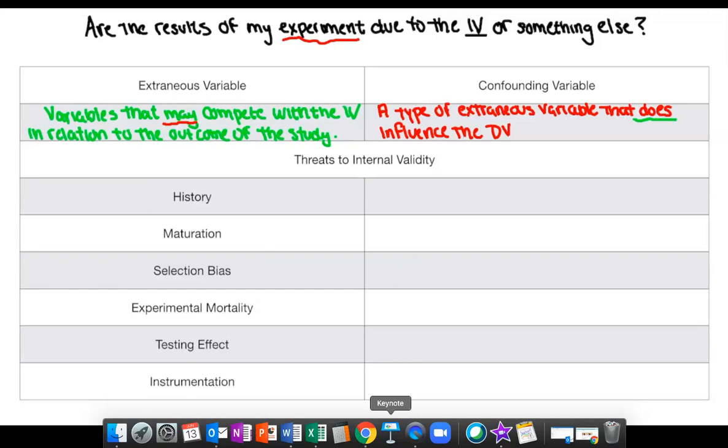We're going to look at what we call threats to internal validity. The terms that we have listed here are history, maturation, selection bias, experimental mortality, testing effect, and instrumentation. These are all threats to internal validity depending on the study that we look at or investigate. It's important to note that these terms represent something unique and specific.